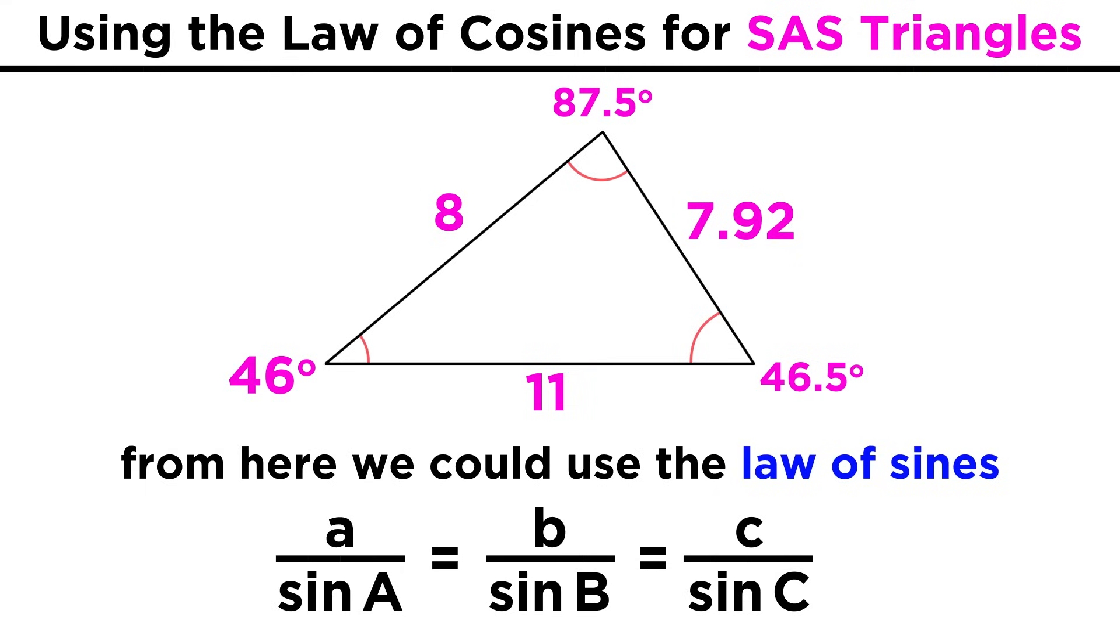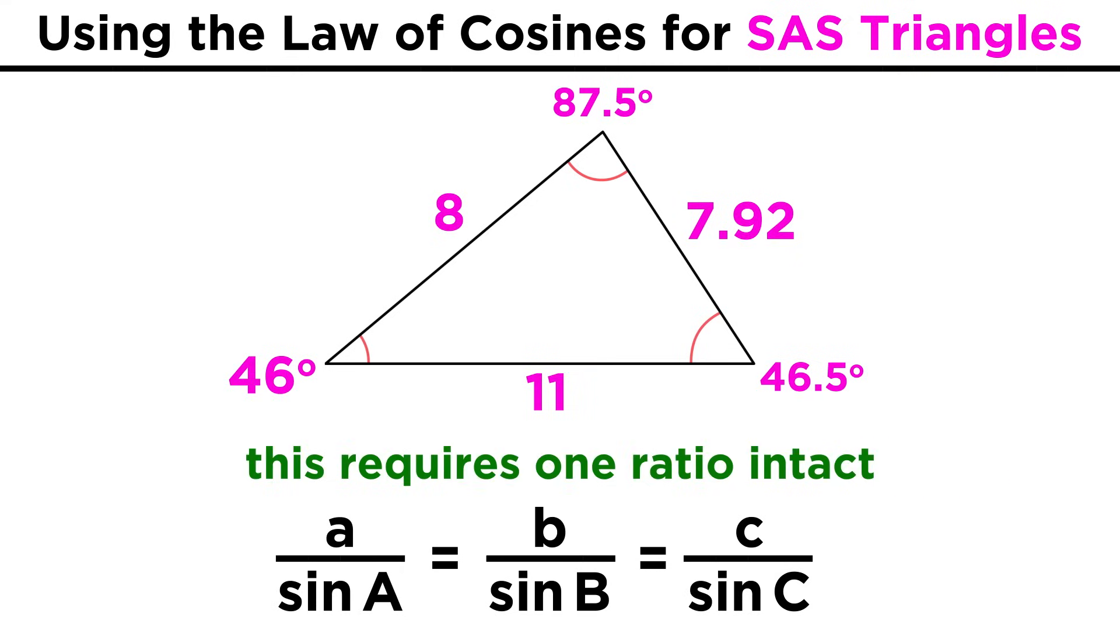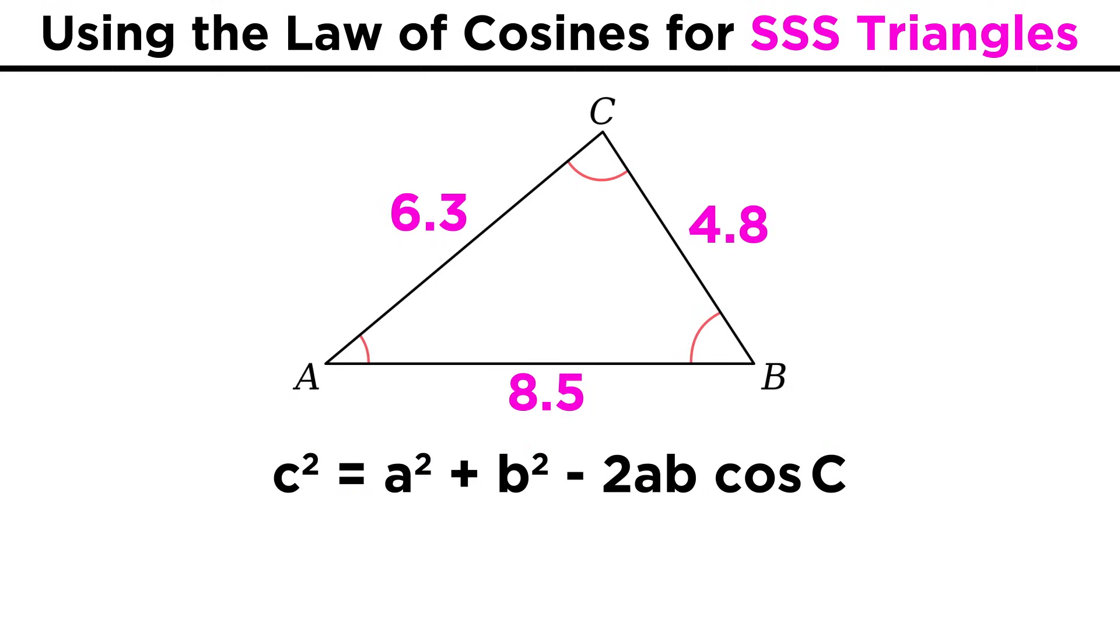Notice that we couldn't have solved this with the law of sines alone, because to use that law, we need one side and angle that correspond to one another, as well as one other piece of information, in order to start using the ratio. With the law of cosines, we can also solve for side side side triangles.